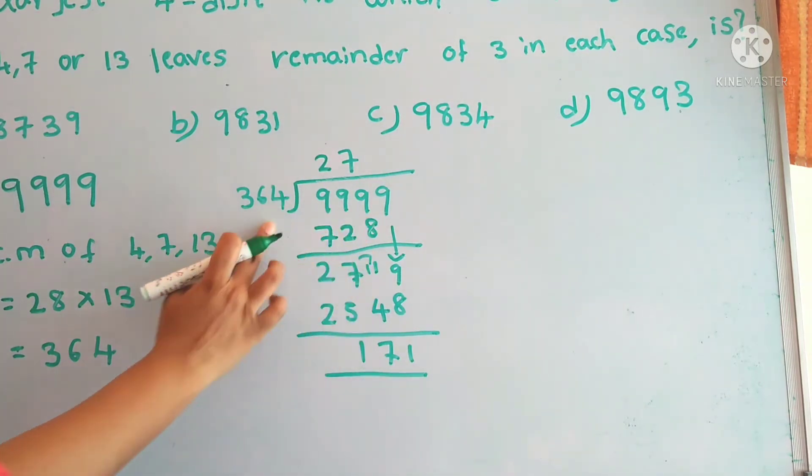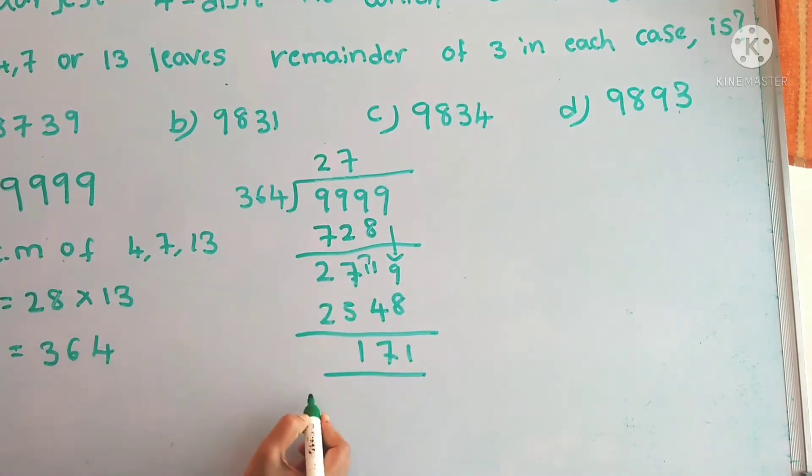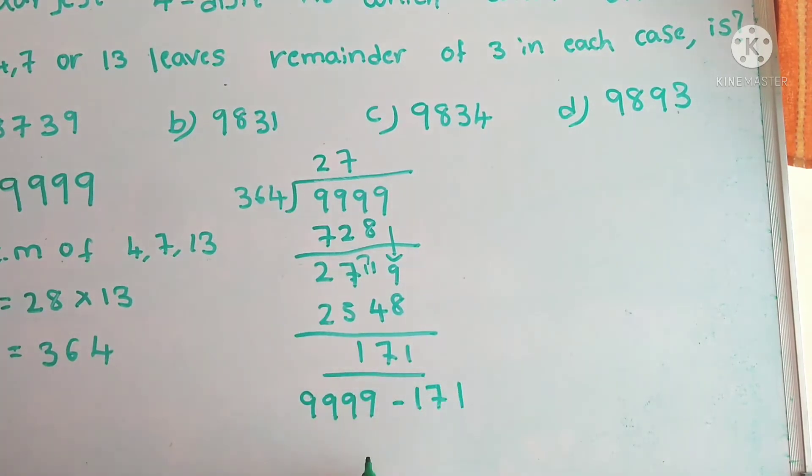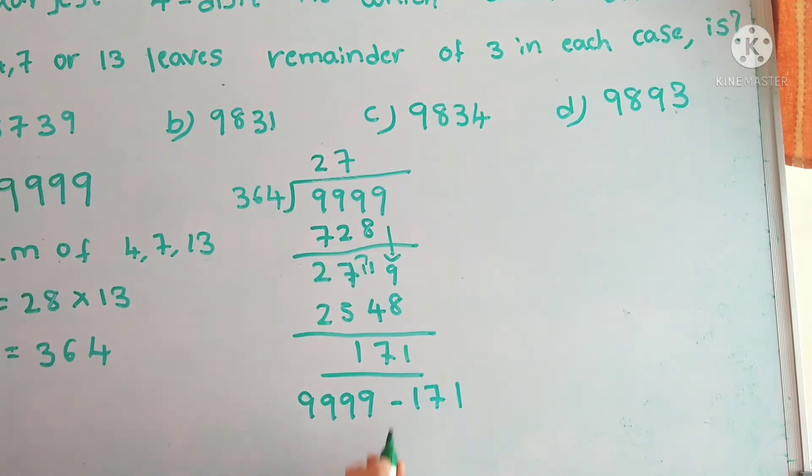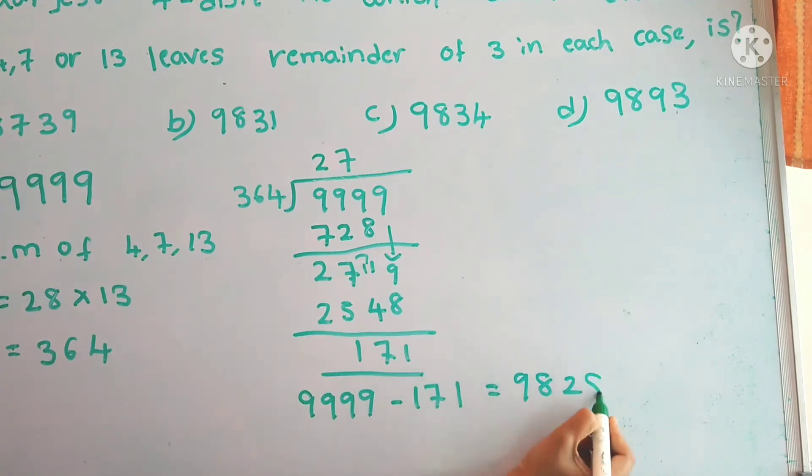So now this 171 is extra number. So if we subtract the 171 from 9,999, we will get the actual number that is exactly divisible by 364. So 9,999 minus 171 equals to 9,828.